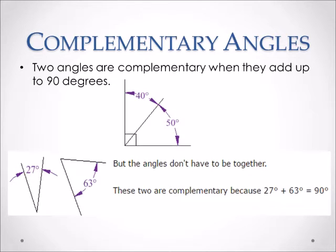Here, you also have complementary angles, but they are not next to each other, and they don't have to be. These angles are 27 degrees and 63 degrees. When you add them together, you get 90 degrees. Therefore, these are also complementary angles.